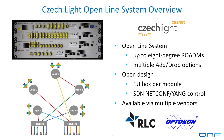Here you can see a brief overview of the CheckLight open line system. It's up to 8-degree ROADMs with multiple add-drop options. It has an open design with one new box per module, and is SDN NETCONF YANG enabled, meaning that ONOS was capable of controlling it via a NETCONF interface over the public YANG model. It's available through multiple vendors and you can find more information on the CheckLight website.